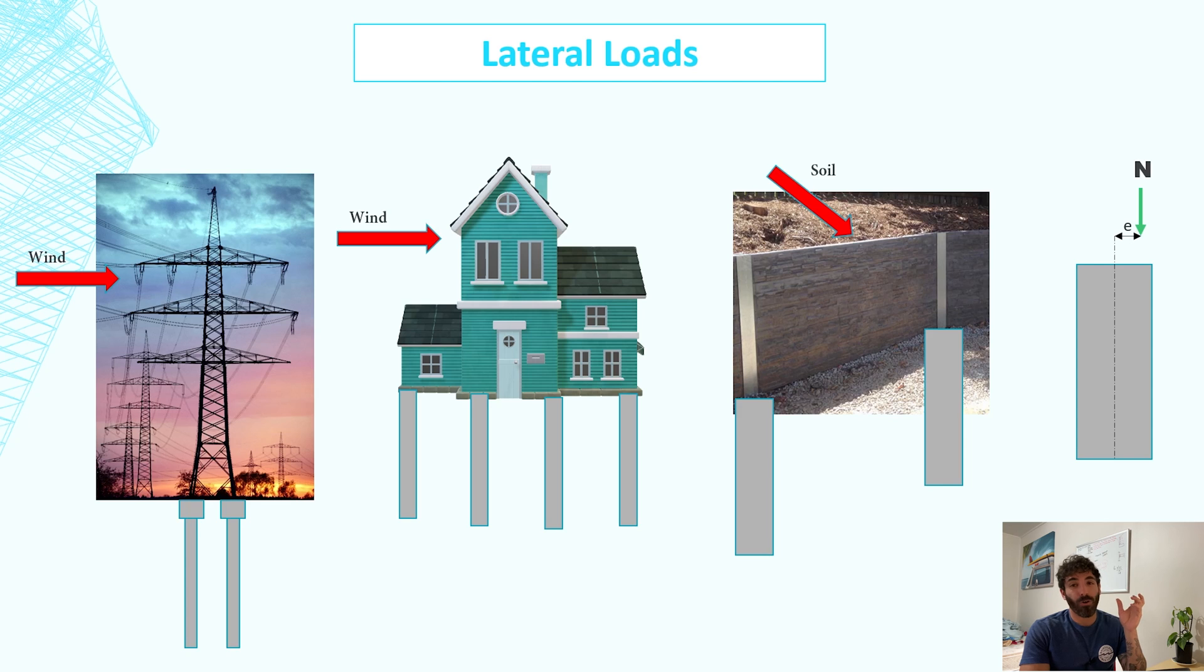Another load that can cause bending moment on pile is eccentric vertical loads. AS 2159 states that any pile needs to be designed for a bending moment of force times 0.05 times the diameter as a minimum. If you go to clause 7.2.1, the minimum is 75 millimeters, but if you have an eccentricity that's greater than both of these numbers, you obviously will use this eccentricity, the greatest one.